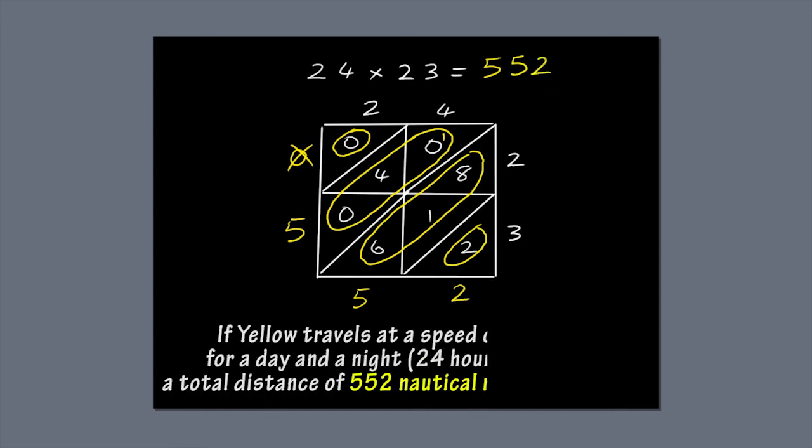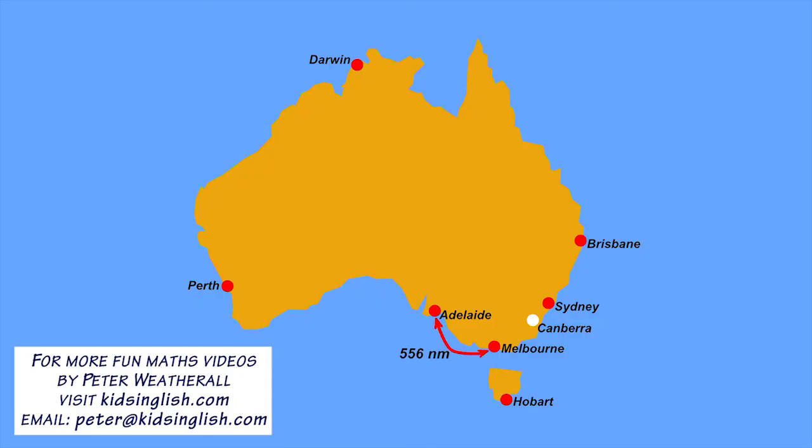So, if Yellow travels at 23 knots for a day and a night, he covers a total distance of 552 nautical miles, or approximately 1,022 kilometres. That's almost the distance between Port of Melbourne and Port Adelaide. Now, that's quite a sea journey, isn't it?